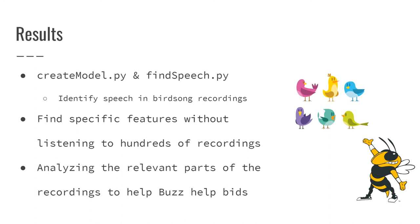In the end, we came up with two scripts: one to create and train models based on the data set given, and one to identify speech within the desired data set. This allows researchers to identify speech without listening to hours of ambient noise. Our code could also be trained on a different data set to identify vehicles or other interference noises. This project is a small contribution to the ongoing research at Georgia Tech to ensure that our vibrant bird population has a nourishing environment where they can thrive.